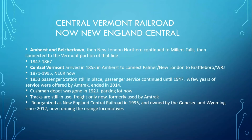The Central Vermont Railway is now called the New England Central. It started out as the Amherst and Belchertown in this area, and the New London Northern. It continued to Millers Falls and then connected to the Vermont portion. The Central Vermont arrived in 1853 in Amherst to connect the Palmer New London branch to the Brattleboro branch. The 1853 passenger station is still in place — the brick one — where Amtrak stopped until passenger service on the CV ran until about 1947. A few years of service were offered by Amtrak that ended in 2014. Myself and a couple other Amherst folks were on one of those last runs at the end of 2014 — just wanted to get the mileage.